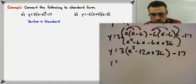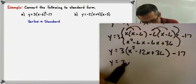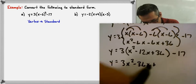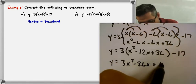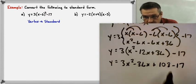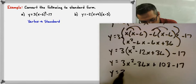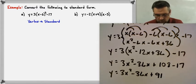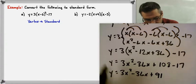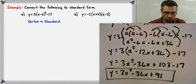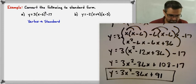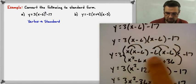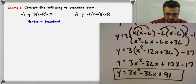When I multiply by 3, I get y equals 3x squared minus 36x — and 36 times 3 is 108 — and then minus 17. Combining the 108 and the negative 17, we end up with y equals 3x squared minus 36x plus 91. That is our standard form. So the steps are: expand, multiply the two binomials, distribute, and combine like terms.